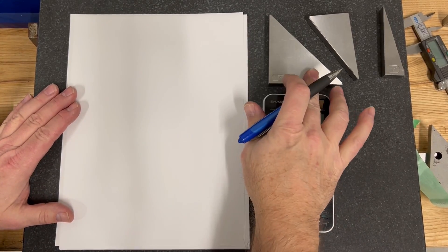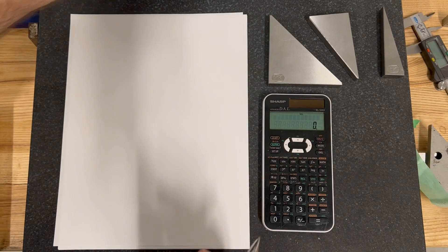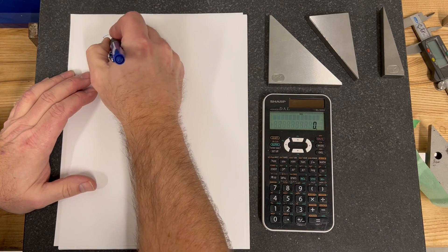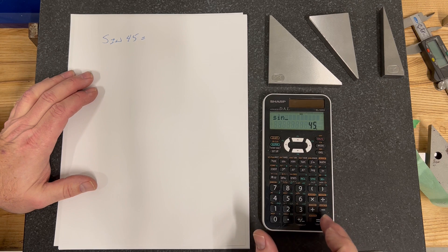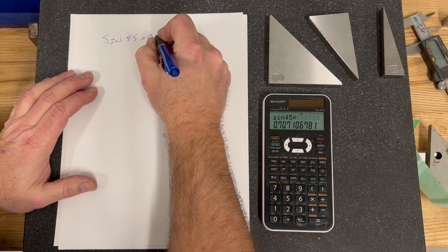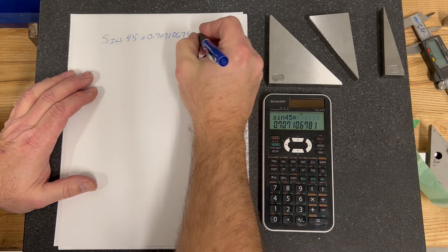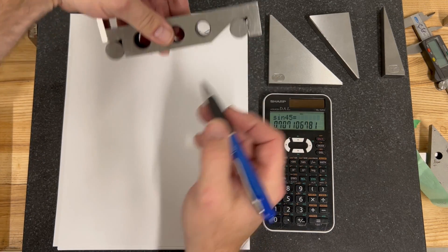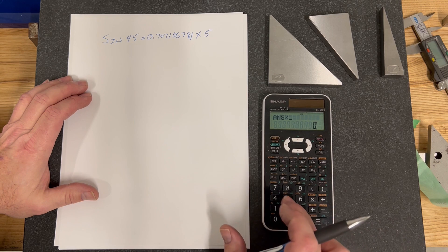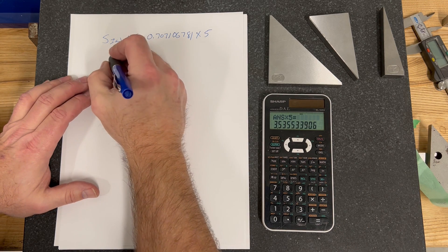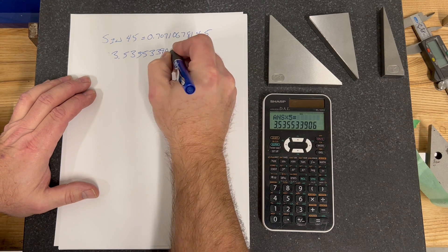Let's start off with this 45 degree angle. We're going to be using a sine bar. So we're going to say sine 45 equals 0.70710679 times 5 inches. We're going to be using a 5 inch sine bar, and not all sine bars are 5 inches so you got to use the right number with the right length of sine bar that you have.